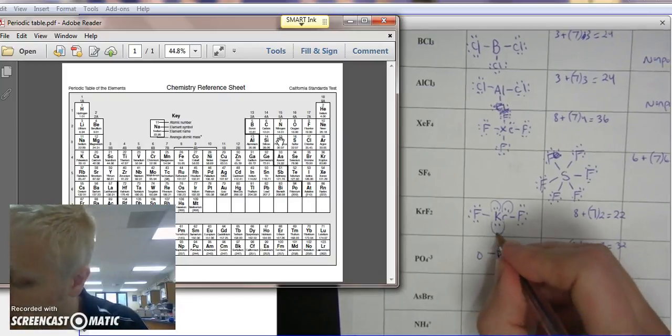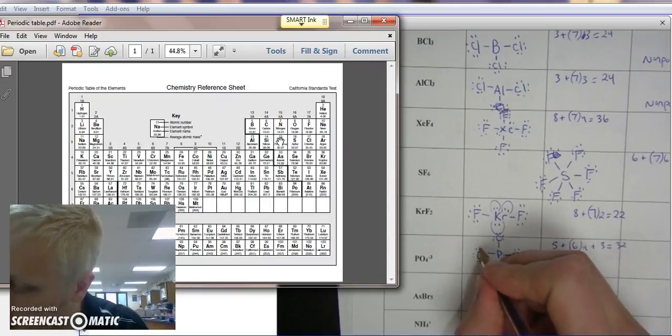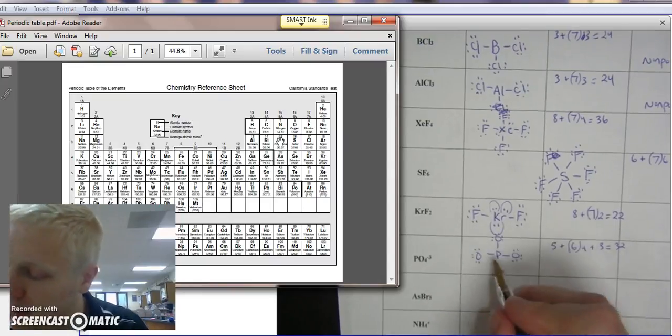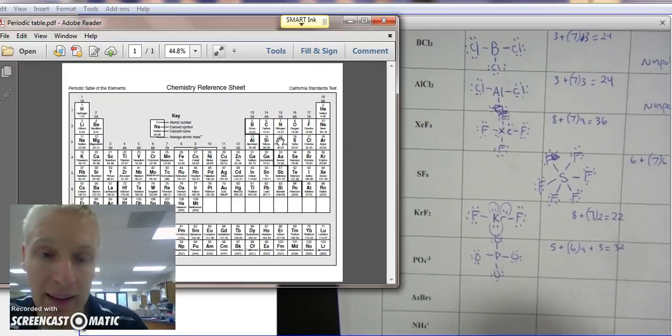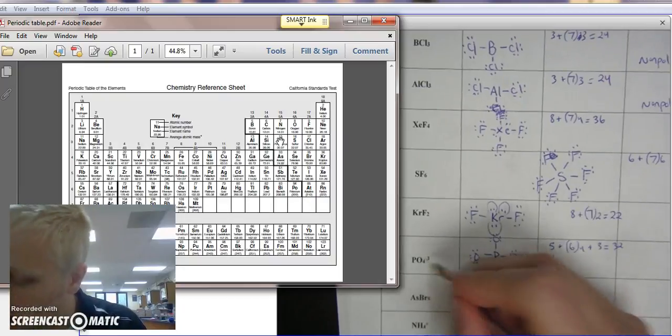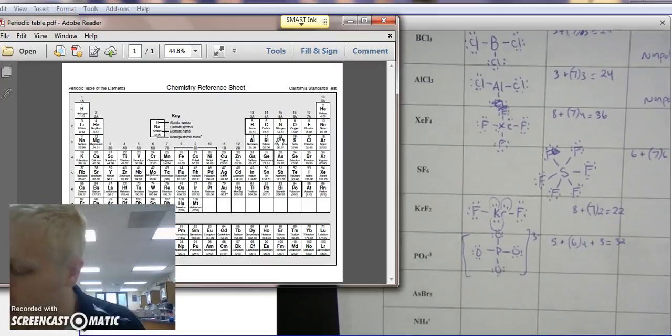We're going to start adding electrons to the outer atoms, and then any leftovers to the center. [counting from 2 to 32]. And this phosphorus has 2, 4, 6, 8. So it doesn't necessarily expand the octet. But since it's a polyatomic ion, we have to put brackets around it, and a 3 minus.